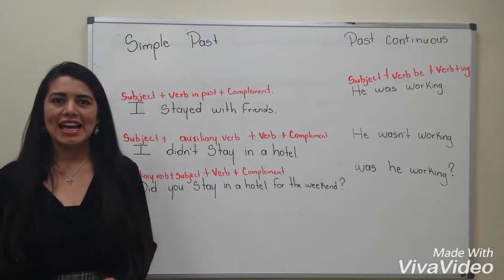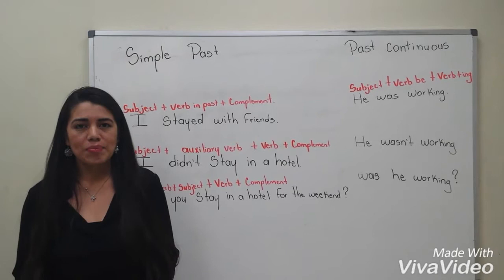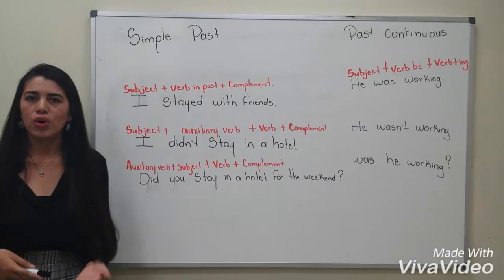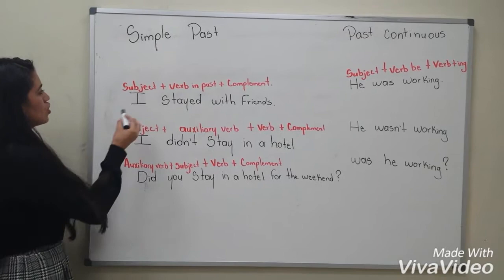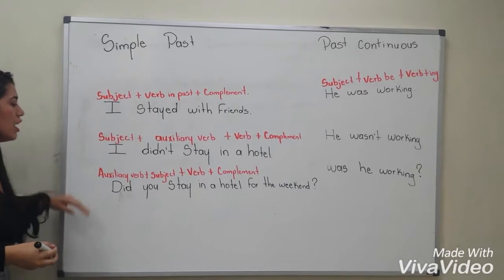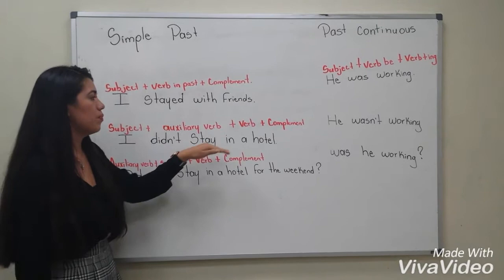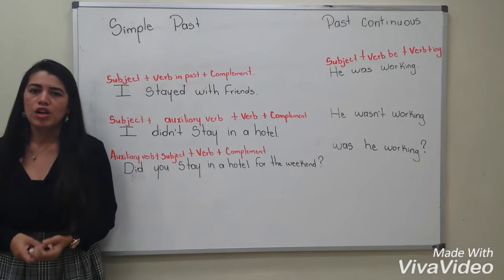Hi, everyone. I'm Daniela. Today I'm going to teach you about simple past and past continuous. Use the simple past to talk about finished actions in the past. In the simple past, we use the auxiliary verb did — did is the past of do or does. For example, I stayed with friends. We use subject plus verb in past plus complement. For a negative sentence: I didn't stay in a hotel. We use subject plus auxiliary verb in negative form plus verb plus complement. If you have the auxiliary verb, you don't change the base form of the verb.